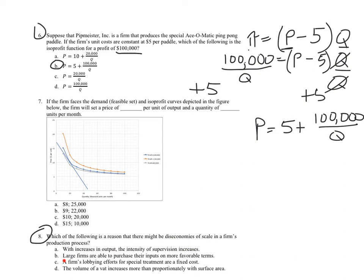We better look at B, C, D just to make sure. Large firms are able to purchase their inputs on more favorable terms. That's true, but that's an economy of scale, not a diseconomy of scale. So B is out. Let's turn back to a pen and eliminate B.